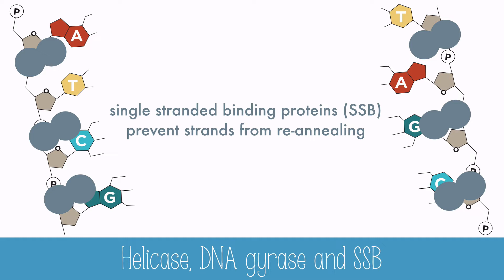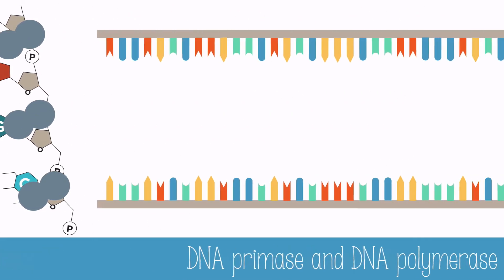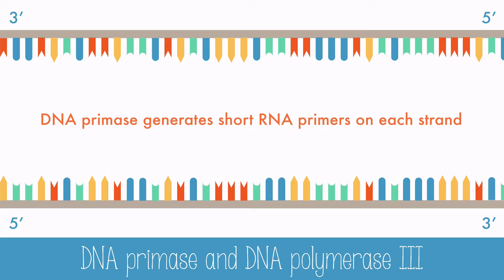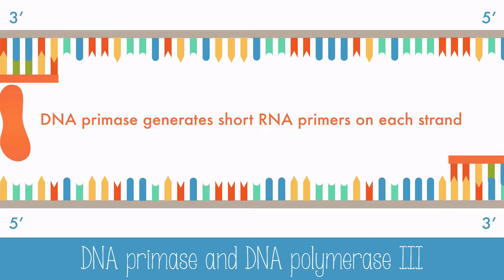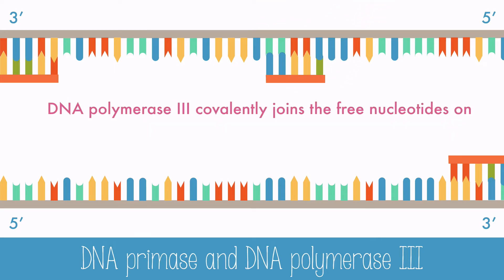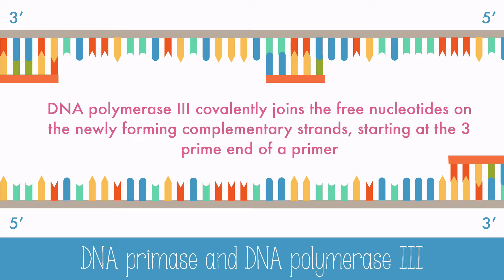As DNA gyrase and helicase move along the DNA strand to unzip the DNA, single-stranded binding proteins will attach to the unzipped strands to prevent them from re-annealing. There are now two open strands of DNA to be replicated. In order to initiate replication, DNA primase generates short RNA primers on each strand. These provide a binding site for DNA polymerase 3, which will covalently join the free nucleotides on the newly forming complementary strands. DNA polymerase 3 can only add nucleotides to the 3' end of a primer, so it must move in the 5' to 3' direction.